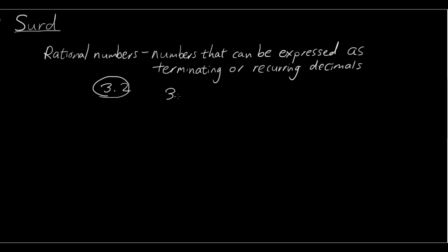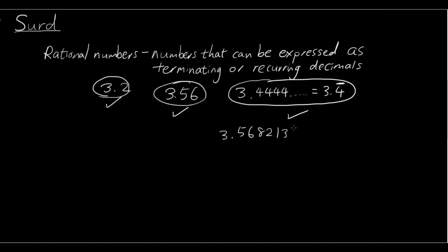If we have something like 3.56, that's also a rational number because it terminates at 0.56. However, also recurring decimals such as 3.444444, which is also 3.4 recurring, that is also a rational number. But if we have something like 3.568213404 and it never ends and there is no recurring pattern, then it is not rational.